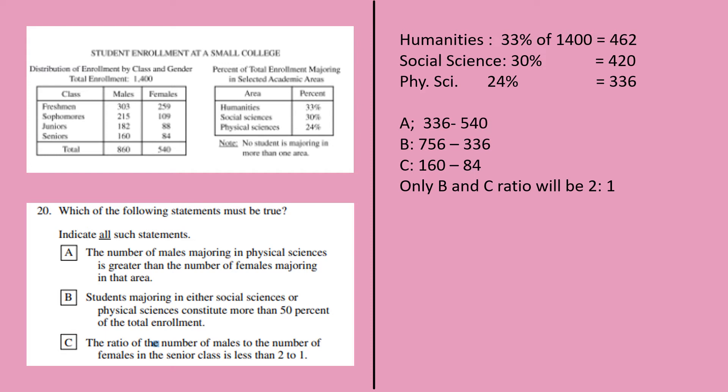B is either social science or physical sciences: 420 plus 336 is 756. 50 percent of the total enrollment will be 336. So you get that as 2 to 1. The ratio of the number of males to the number of females will be 160 to 84, which is also 2 to 1. So the choices are B and C.